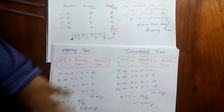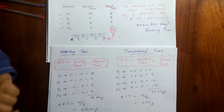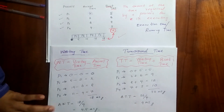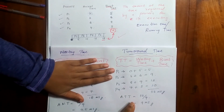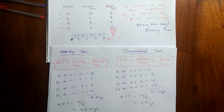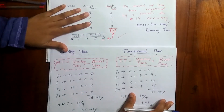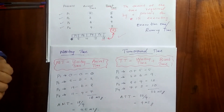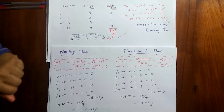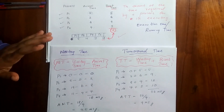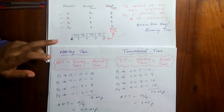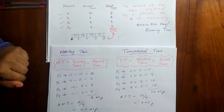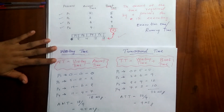We are done with all five steps: drawing the Gantt chart, finding the waiting time, average waiting time, turnaround time, and finally the average turnaround time. This is how we do First Come First Serve. I hope you understood. There are four more scheduling policies to go — links will be given in the description. I'll see you in the next video. Till then, be safe. Thank you.